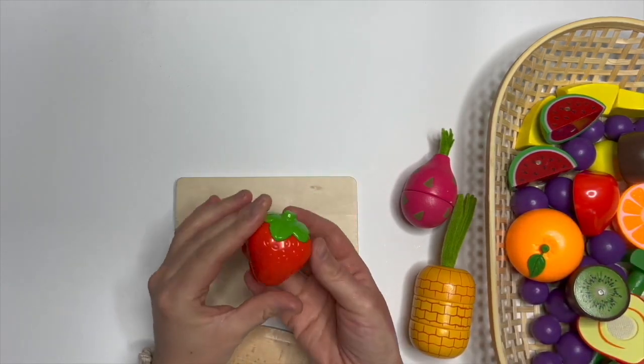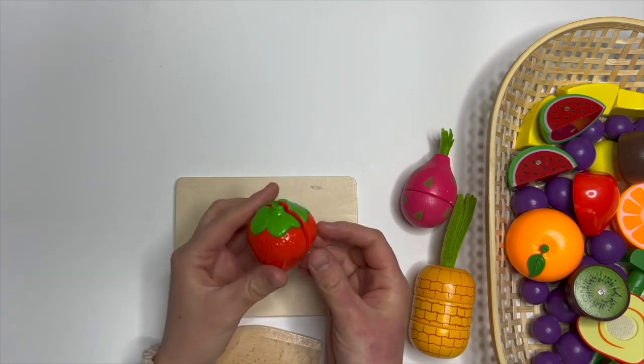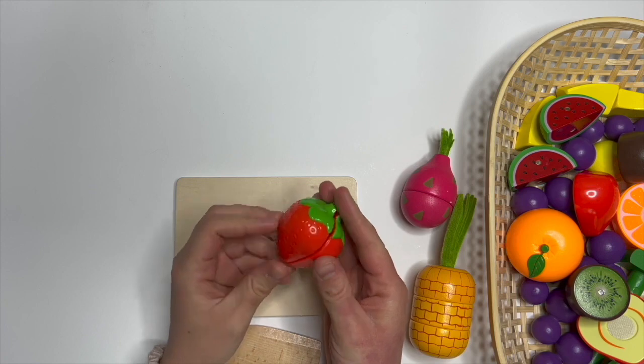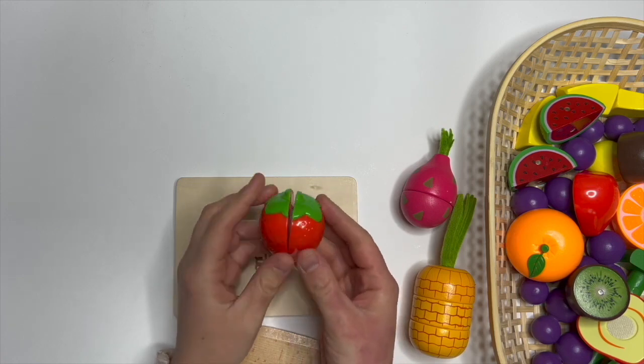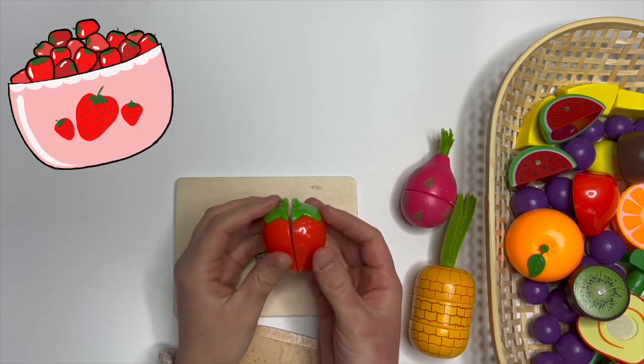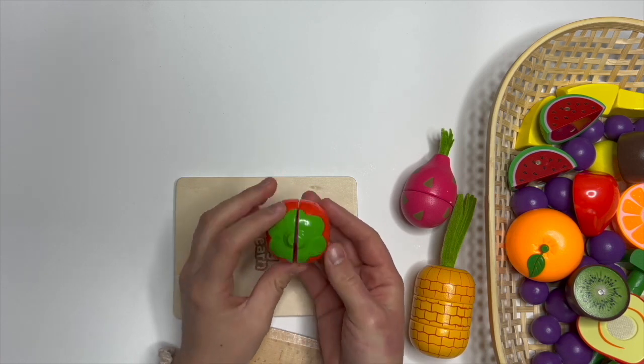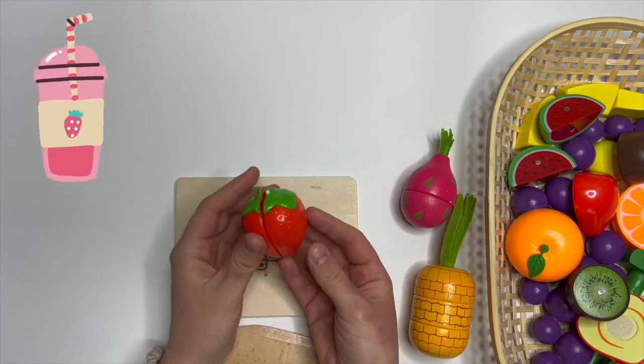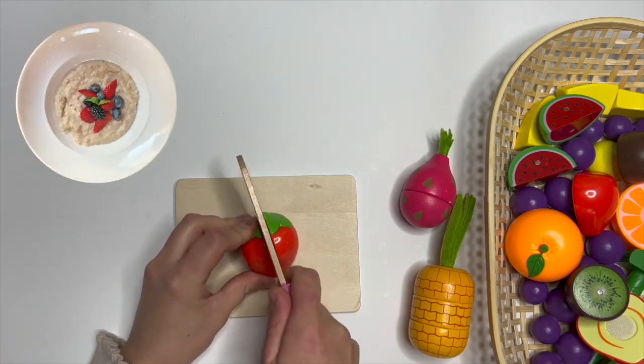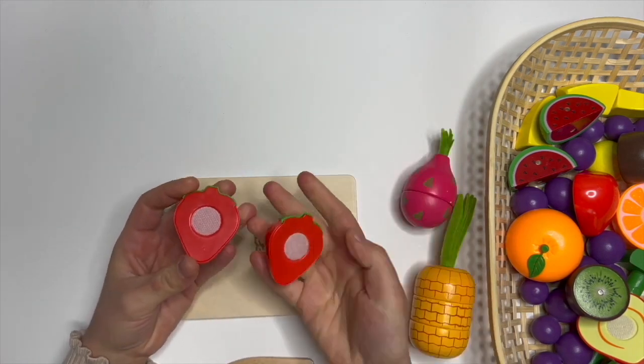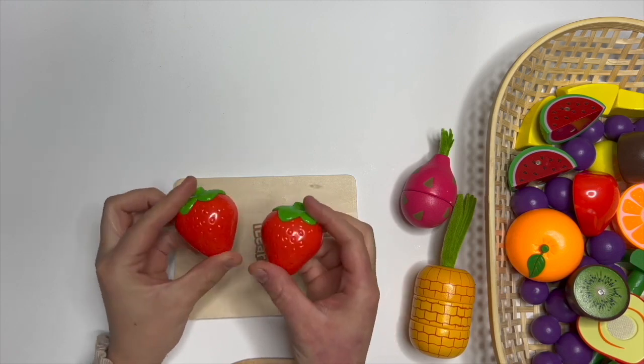Our next fruit is this one. I'm sure a lot of you love this. It's strawberry. Yes, strawberry, strawberry, red strawberry. They're so yummy. They have a lot of vitamin C. We can eat it like this. We can put it in smoothies, oatmeal, red strawberry.